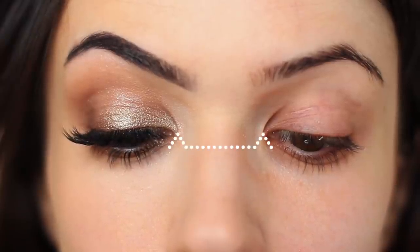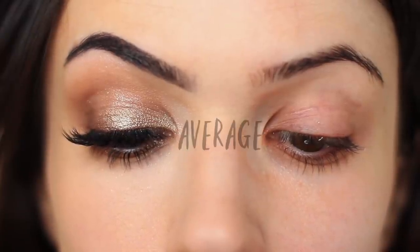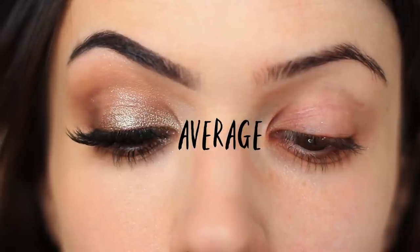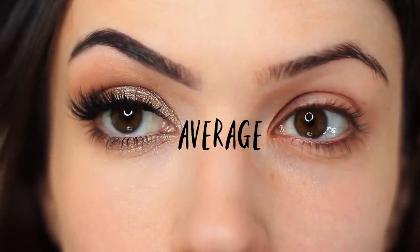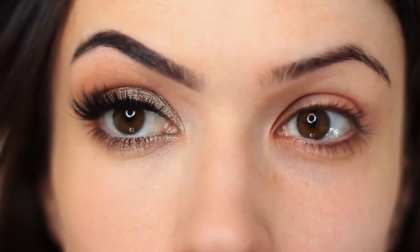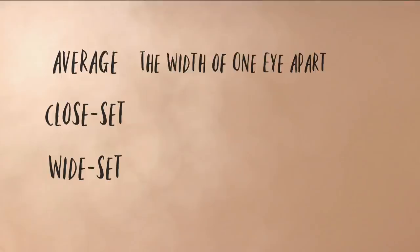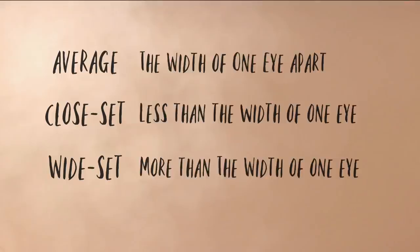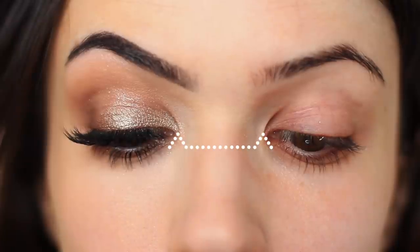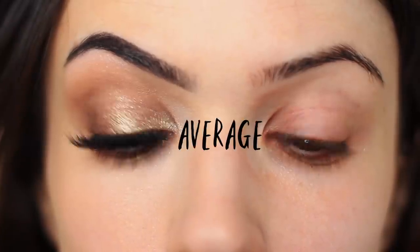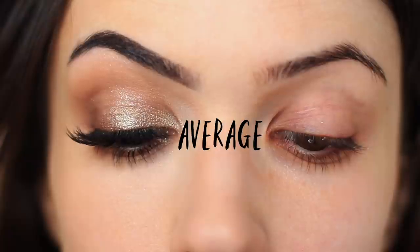Just because something is referred to as average doesn't mean it's the most ideal, best, or most beautiful. All of these eye shapes are beautiful in their own way. Average should really just be used as a base point to work from. So let's use average spacing as that base point and talk about eyeshadow placement.